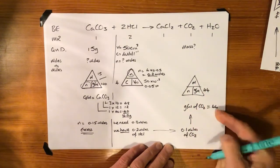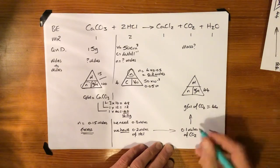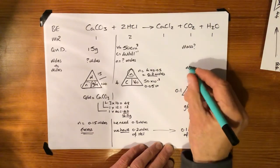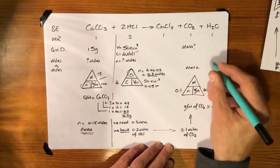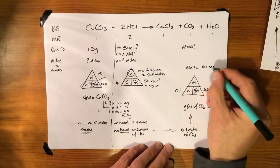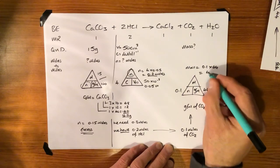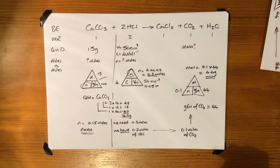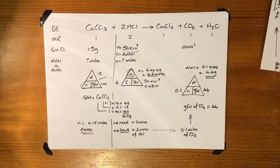Gram formula mass we just worked out is 44. Number of moles we've got is 0.1, so the mass equals 0.1 times 44. That equals 4.4 grams of CO2 has been formed. Right, 4.4 grams of CO2.